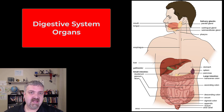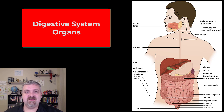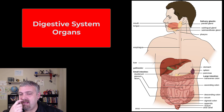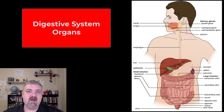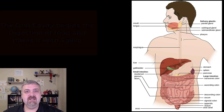The accessory organs are going to be your salivary glands, your liver, your pancreas, and your gallbladder. "Accessory" is probably not a great word — they're extremely vital. What that means, though, is they're just not part of the GI tract. As we're going through here, I'll also talk about the different names we use for food as it travels through the GI tract.